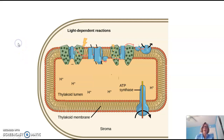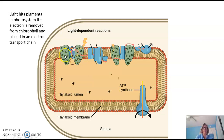When light hits one of these photosystems embedded in the thylakoid membrane, it hits a photosynthetic pigment — a chlorophyll — and it excites that molecule. That energy gets passed from chlorophyll to chlorophyll until it ultimately hits a pair of chlorophyll in the middle of the photosystem called a special pair. The energy from light then removes an electron from that special pair of chlorophylls and the electron is placed in an electron transport chain.